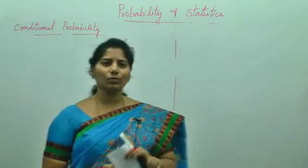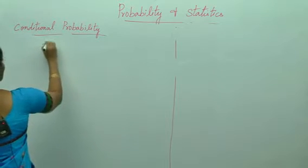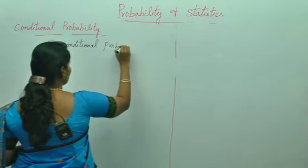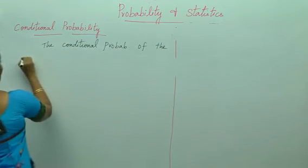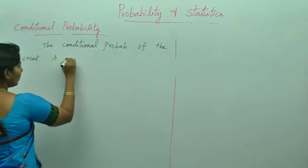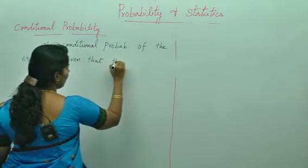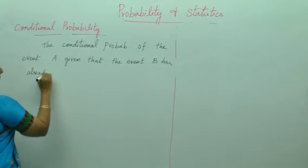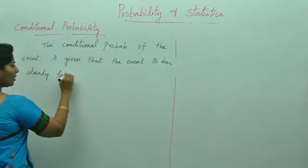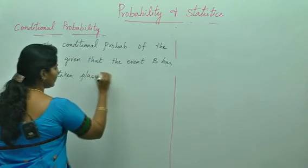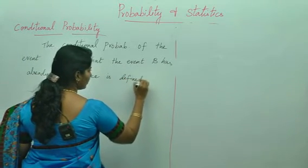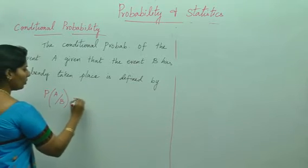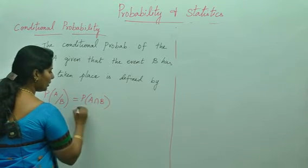Even the definition part they will ask you for 2 marks. The conditional probability of the event A given that the event B has already taken place or already occurred, is defined by P of A given B which is equals to P of A intersection B divided by P of B.